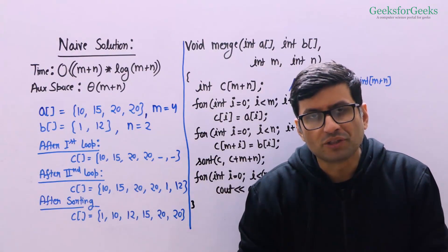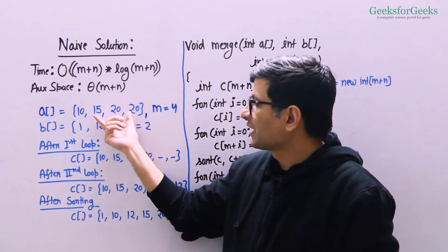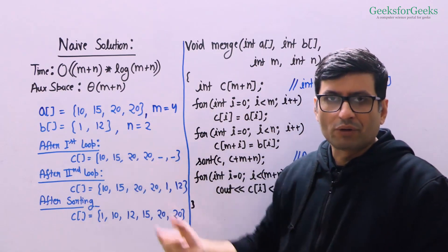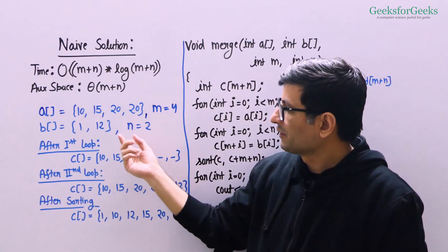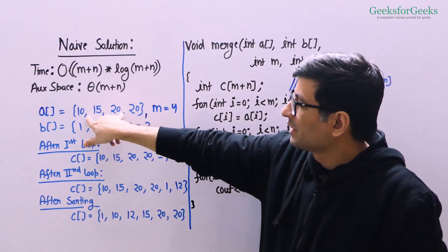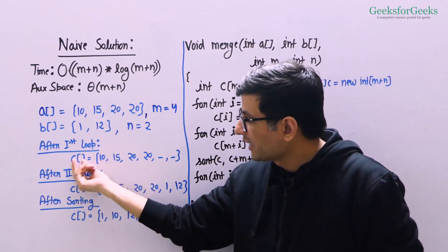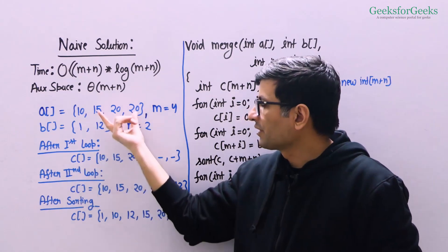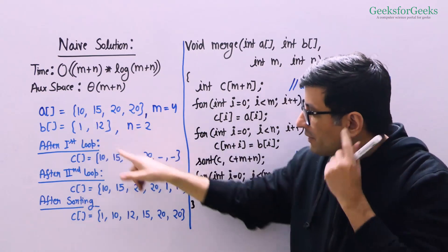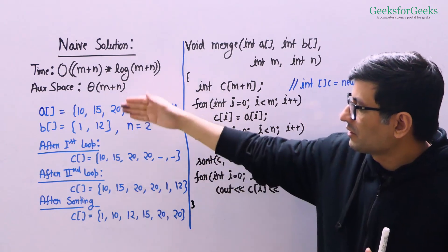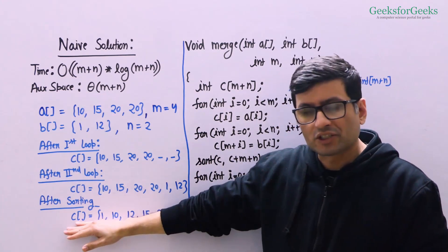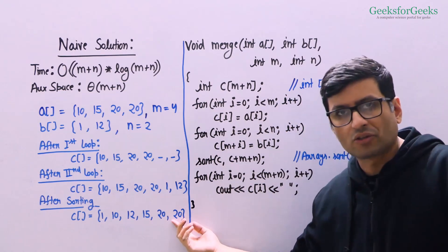Here is a nice solution to solve the problem. We are given array A with length m and array B with length n. What we do first is create an array C of size m plus n — in this example, size 6. After creating the array, we copy the elements of the first array into C, then copy array B elements into C. Our array C now contains both arrays' elements but they are not in sorted order. So we simply call the sort function on array C to get the elements in sorted order.